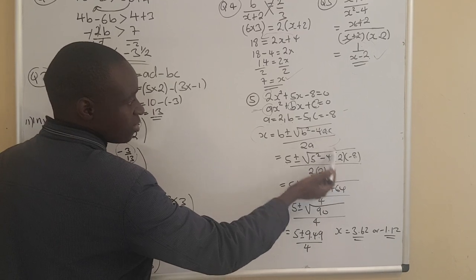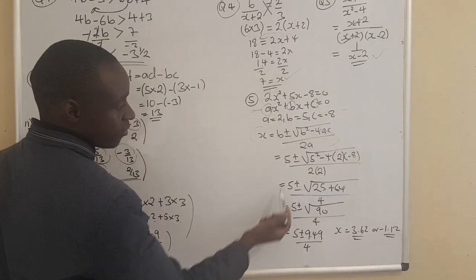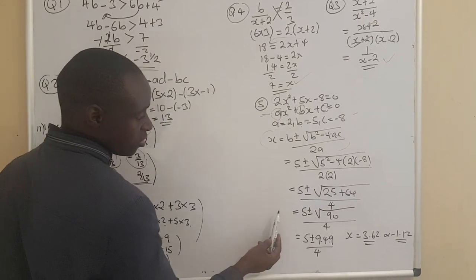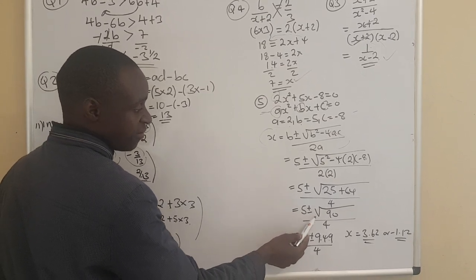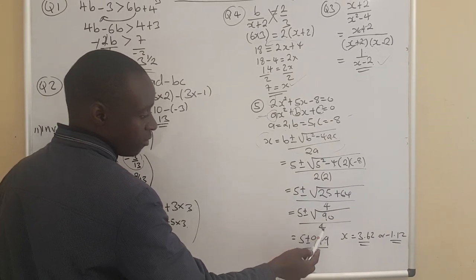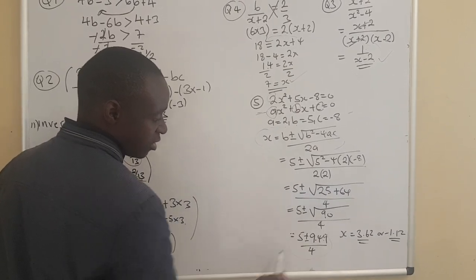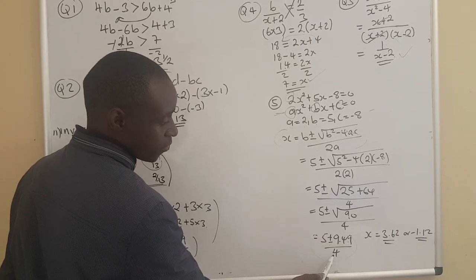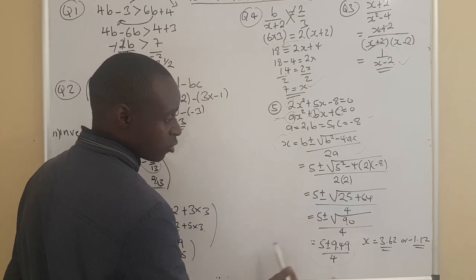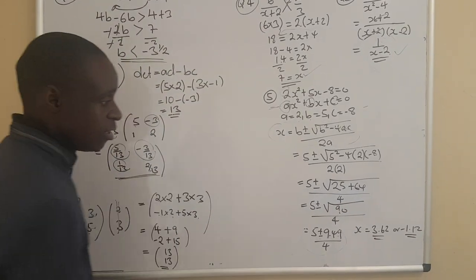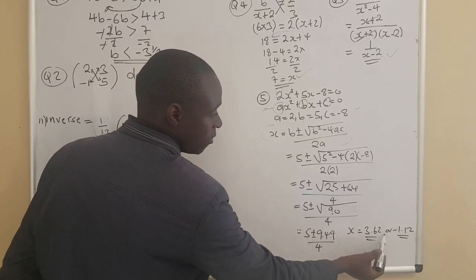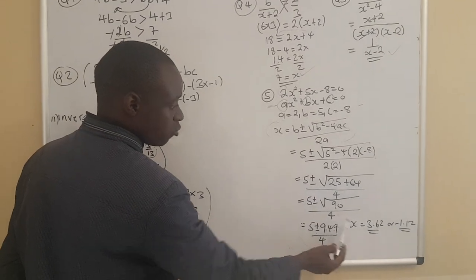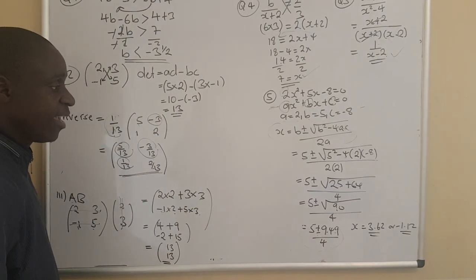We have 4, then a equals 2 and c equals negative 8. The denominator is 2 times 2, which is 4. Computing gives us negative 5 plus or minus the square root of 89 over 4, which evaluates to negative 5 plus or minus 9.49 over 4. This yields two solutions: approximately 1.12 or negative 3.62. These quadratic expressions always give two answers, one positive and one negative.